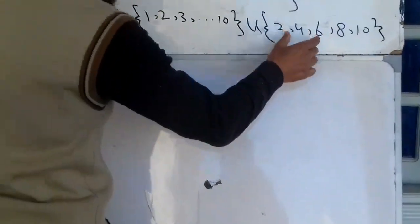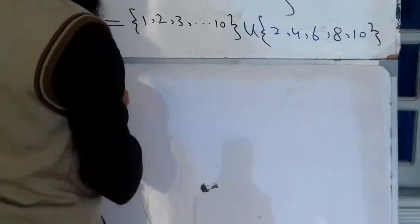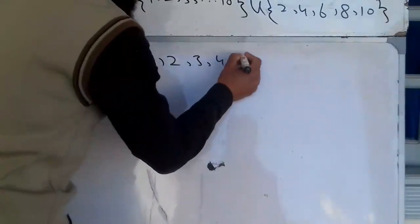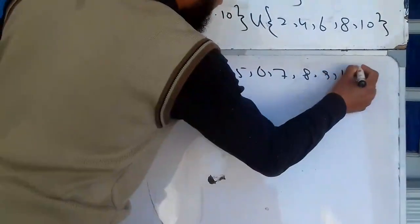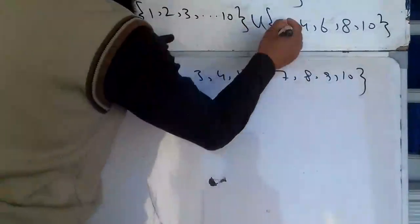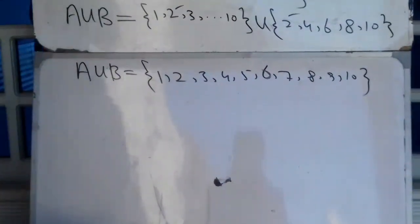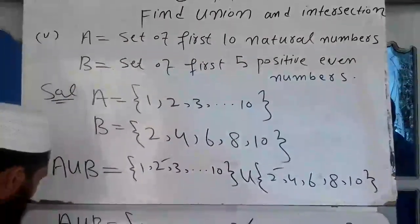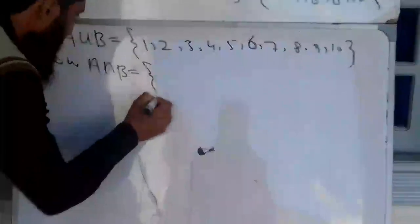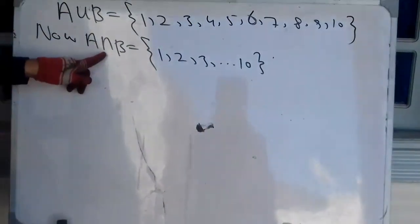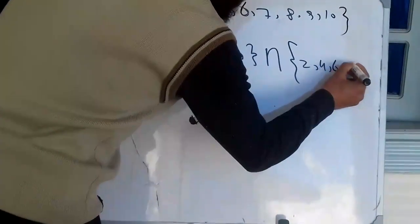A union B is equal to {1, 2, 3, 4, 5, 6, 7, 8, 9, 10}. A intersection B: A is the set {1, 2, 3, ... up to 10}; we have the intersection operator symbol; B is {2, 4, 6, 8, 10}.